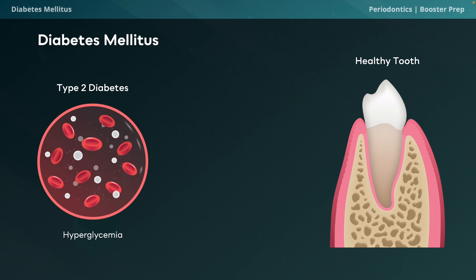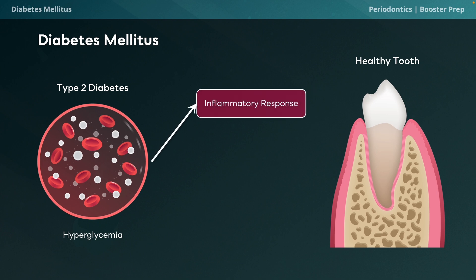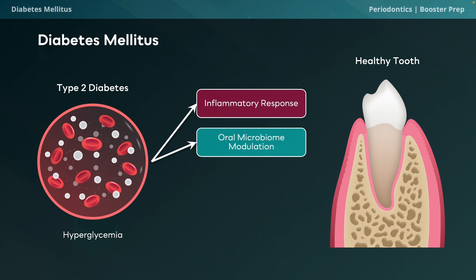Periodontitis is commonly associated with diabetes mellitus. Patients with diabetes may present with bleeding on probing and significant bone loss, especially if uncontrolled. Diabetes significantly impacts both periodontitis and peri-implantitis by exacerbating their progression and complicating management. It is a major risk factor, increasing susceptibility to infection and tissue destruction. Elevated blood glucose levels increase inflammatory cytokines, enhancing tissue breakdown and worsening disease. Diabetes can also alter the oral microbiome, promoting growth of pathogenic bacteria.